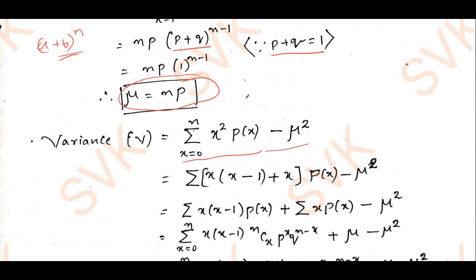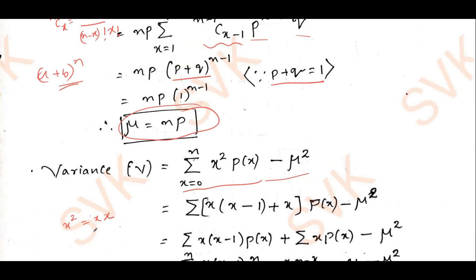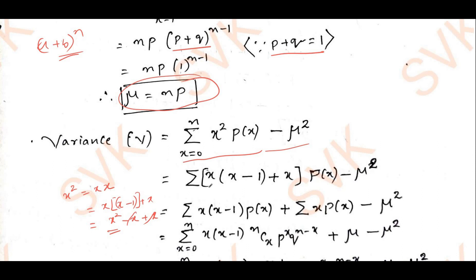I will express x² by writing it as x·(x−1)+x. If you expand, x·(x−1)+x = x²−x+x = x². Taking x common gives x(x−1)+x. Substituting back, the variance becomes summation of [x(x−1)+x]·p(x) − μ², which expands to summation x(x−1)·p(x) plus summation x·p(x). The summation x·p(x) is nothing but the mean μ.